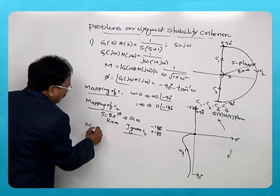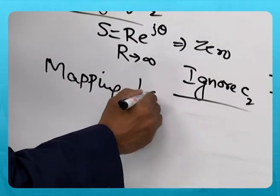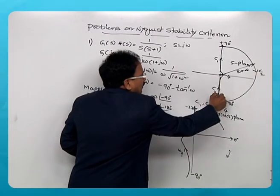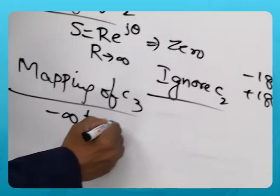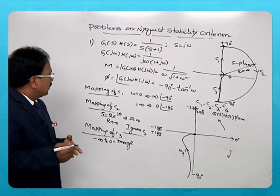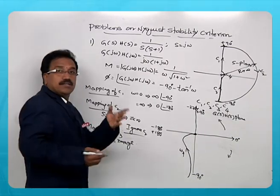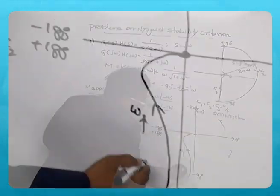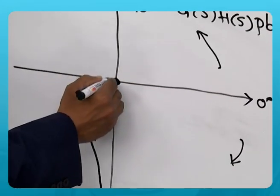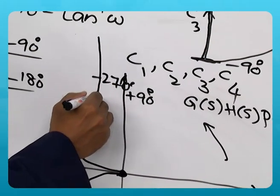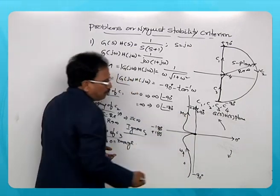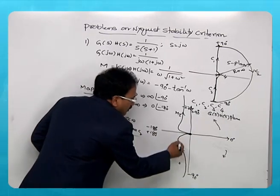The next section is the mapping of section C3, which covers the negative imaginary axis with limits from −∞ to 0. The mapping of section C3 is the mirror image of the polar plot. This is the polar plot as ω increases from 0 to infinity; now going from −∞ to 0, this will be the mirror image of the polar plot.